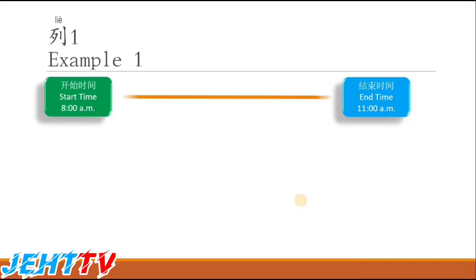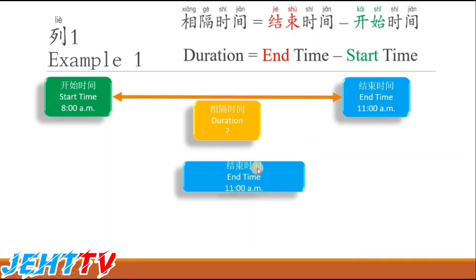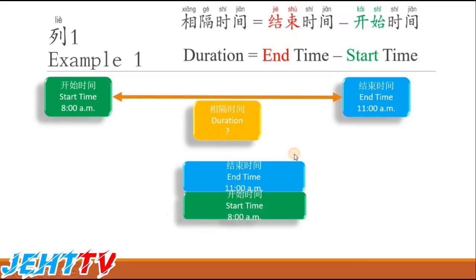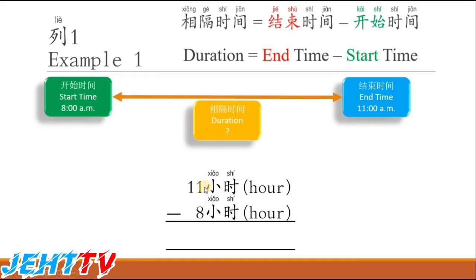Now we look at Example 1. The start time is 8 a.m. and the end time is 11 a.m. So what is the duration between these two times? Don't forget the formula: duration equals end time minus start time. So 11 a.m. minus 8 a.m. — that is 11 hours minus 8 hours — equals 3 hours. The duration for Example 1 is 3 hours.